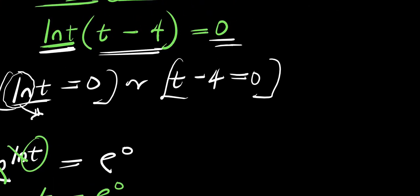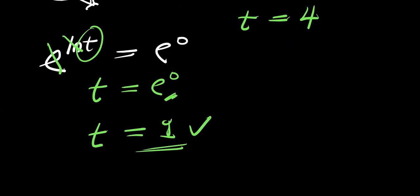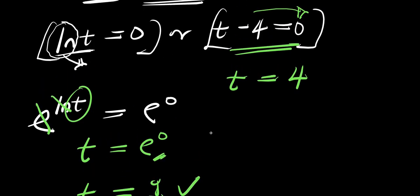Remember we still have the other equation, which is t minus 4 equals 0. You move the negative 4 over, and you have t equals 4. So we can say that we have gotten two different solutions using this method: t equals 1, and t equals 4.